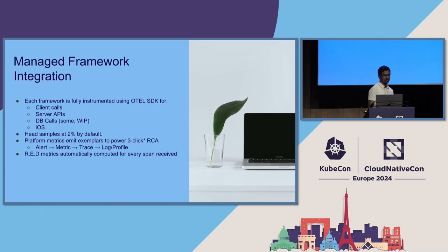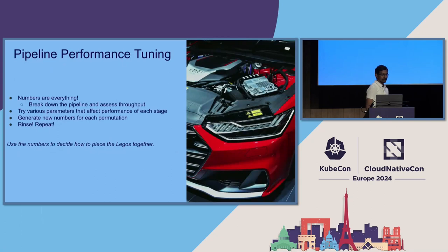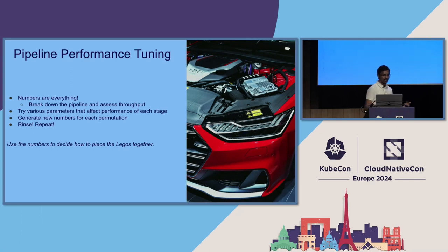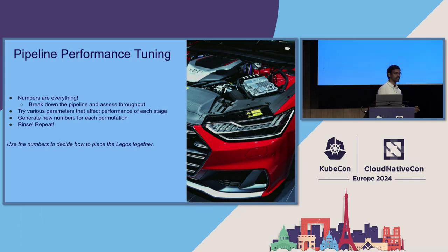We make sure that RED metrics are computed for every kind of span. The next part is pipeline performance tuning. With performance, numbers are everything. We broke down the pipeline into independent chunks, evaluated how the numbers look, tried different combinations, and rinse and repeat — to the point where we can figure out how to place these Legos in a way that works for us.